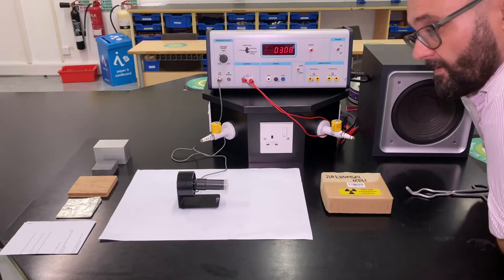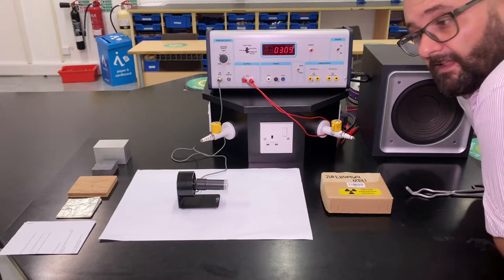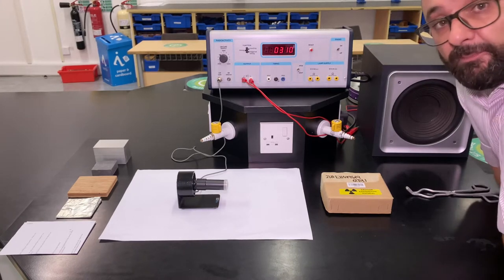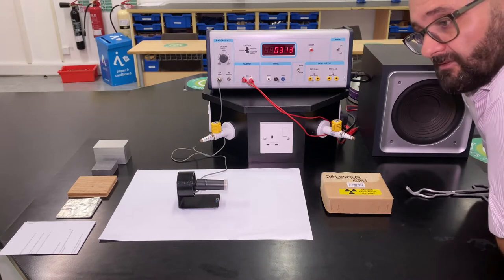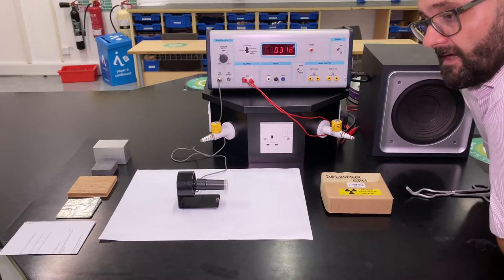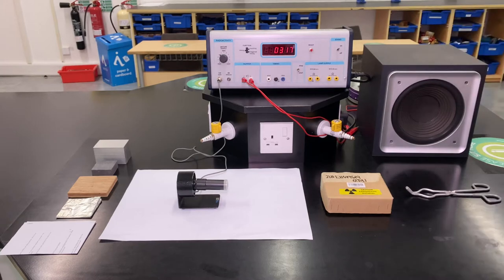Okay, here's another short video where we're going to run through again the different properties of alpha, beta, and gamma. Specifically, we're going to look at what materials stop alpha, beta, and gamma.